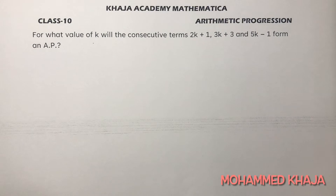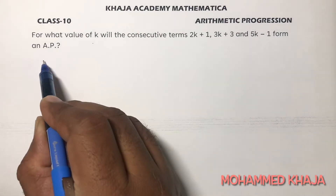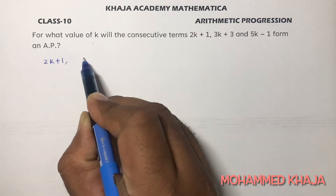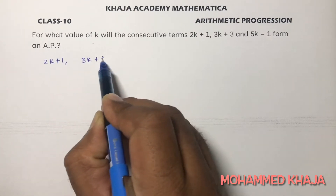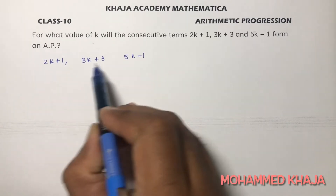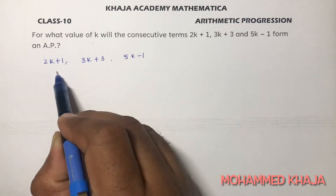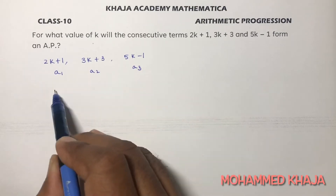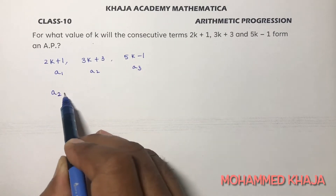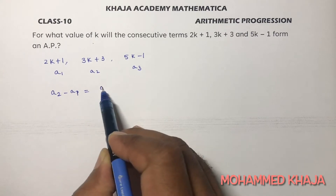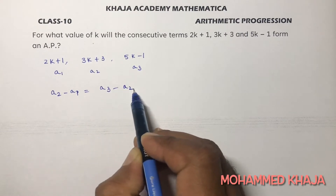For what values of k will the consecutive terms 2k+1, 3k+3, and 5k-1 form an AP? So if these are the three terms of an AP — a1, a2, a3 — then the condition for AP is a2 minus a1 should be equal to a3 minus a2.